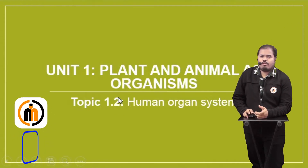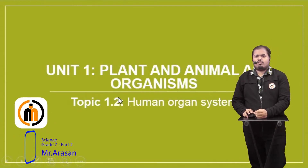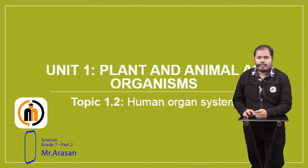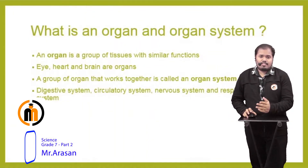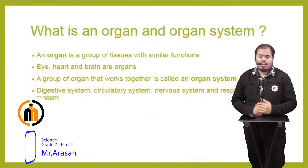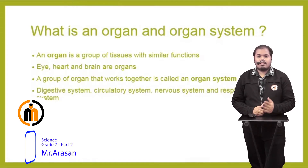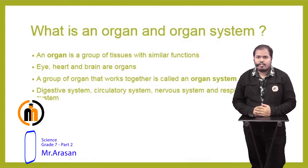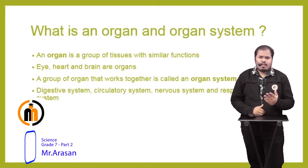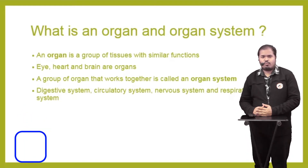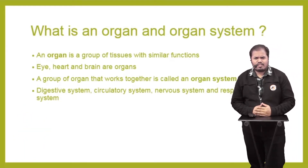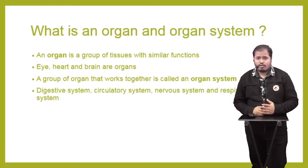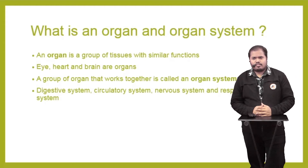Good day! Today we're going to look at topic 1.2 from unit 1: human organ systems. Just as we saw in the previous topic how a plant has organs, humans also have organs. An organ is a group of tissues with similar functions — that's the definition of an organ. Examples of organs are the heart and brain.